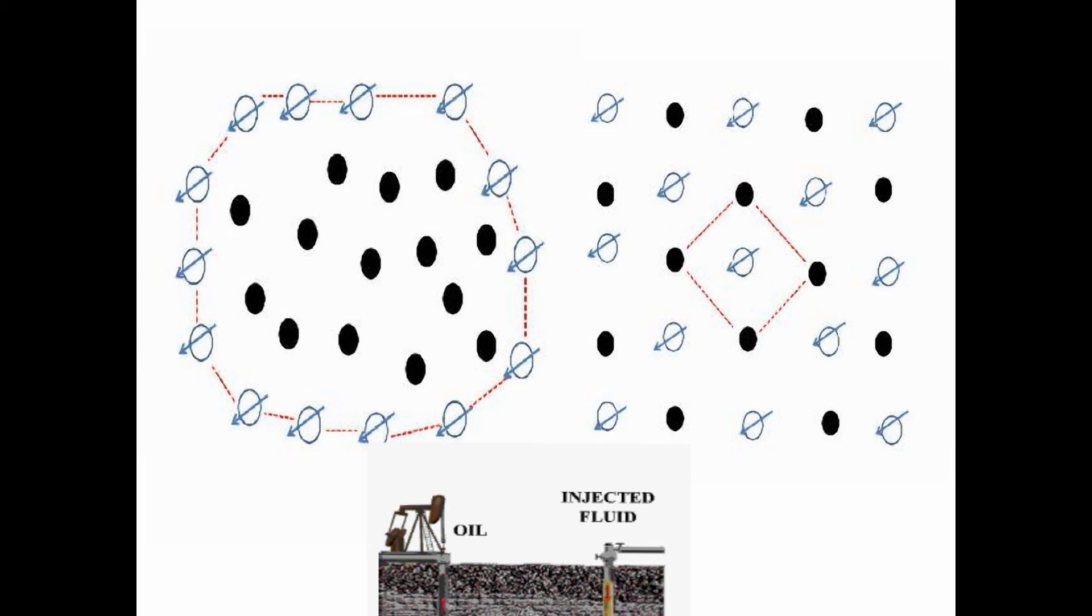The older method on the left forms a peripheral pattern. Its limitation is that sometimes the water doesn't get into the center of the field. To address this problem, the one on the right forms what is called a five-spot pattern.